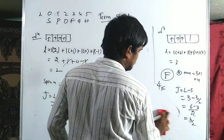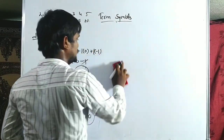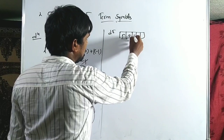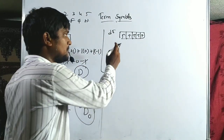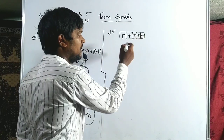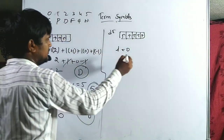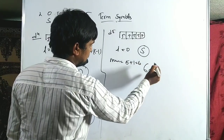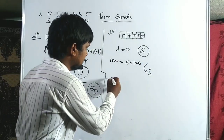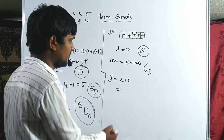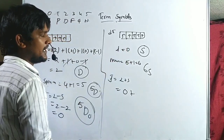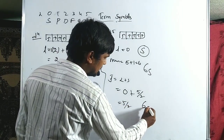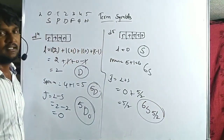For D5: all five ML values (+2, +1, 0, −1, −2) cancel out, so L = 0, term is S. Multiplicity = 5+1 = 6. Since L=0, J = L+S = 0 + 5/2 = 5/2. The ground term symbol for D5 is 6S(5/2).